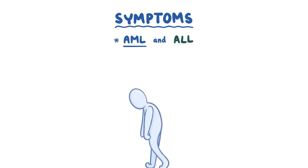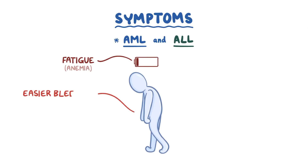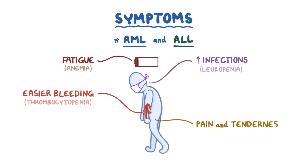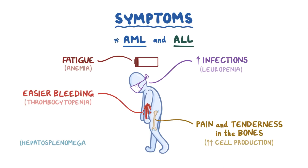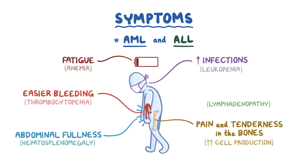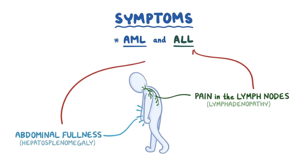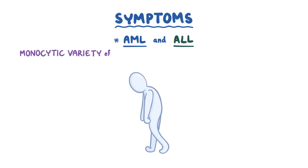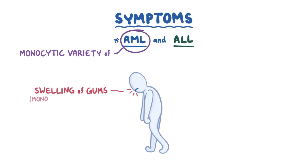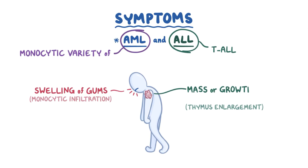Symptoms of both AML and ALL include fatigue because of the anemia, easier bleeding because of the thrombocytopenia, and more frequent infections because of the leukopenia. Pain and tenderness in the bones can occur when increased cell production causes the bone marrow to expand. Hepatosplenomegaly often causes a feeling of abdominal fullness, while lymphadenopathy often causes mild but localized pain in the lymph nodes. However, hepatosplenomegaly and lymphadenopathy are both seen more prominently in ALL rather than AML. In addition, the monocytic variety of AML causes swelling of the gums because of monocytic infiltration. Thymus enlargement in T cell ALL may present as a mass or growth in the mediastinum.